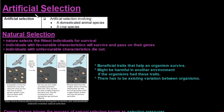Next, we'll look at artificial selection of domesticated animal species and then a crop species. But before we can understand artificial selection, we do need to understand natural selection first.